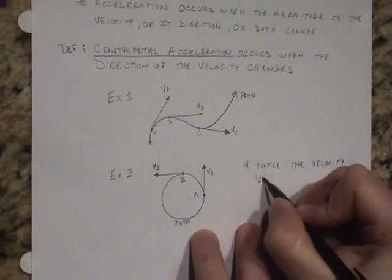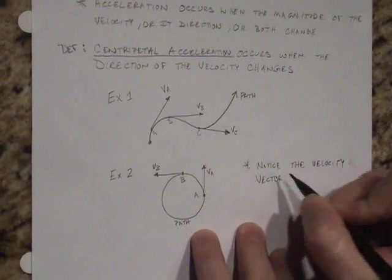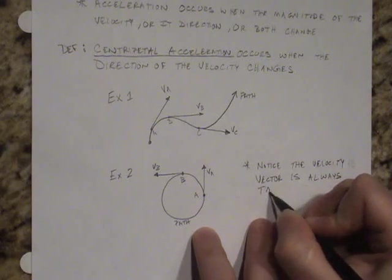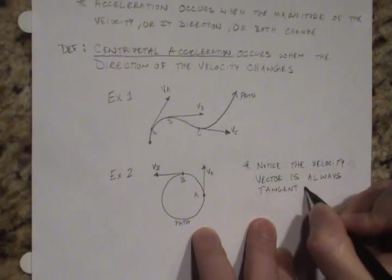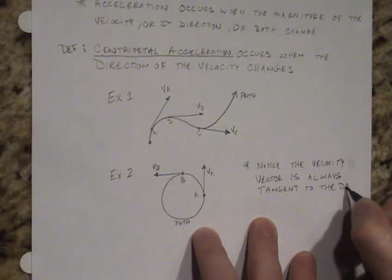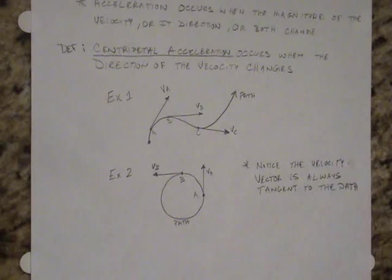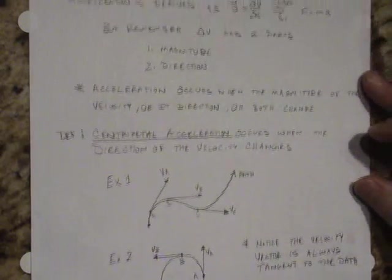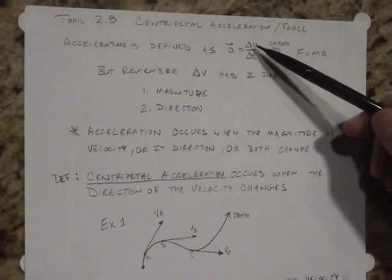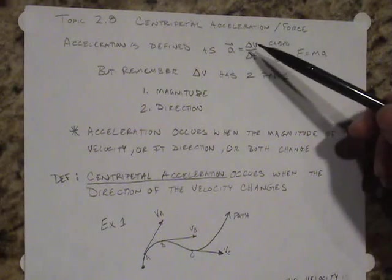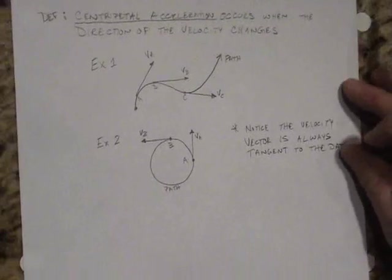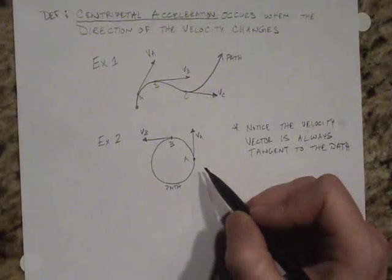So the velocity vector is always tangent to the path, but to understand the acceleration of this object, we need to understand the change in velocity. So we need to figure out what is the actual direction of the velocity. So let's think about this for example two.